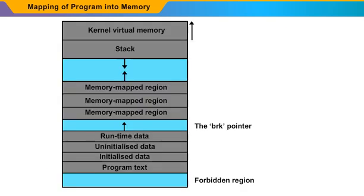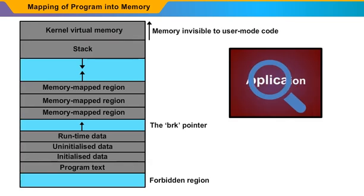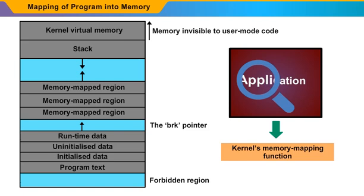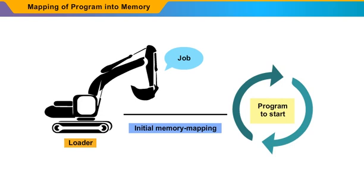The ELF loader reads the header and maps the sections of the file into separate regions of virtual memory. The image shown on the screen is the typical layout of memory regions set up by the ELF loader. The memory region set up by the ELF loader puts a kernel virtual memory region at the beginning of the layout, which is inaccessible to normal user mode programs. The rest of the virtual memory is available to applications, which can use the kernel's memory mapping functions. The job of the loader is to set up the initial memory mapping, which allows the execution of the program to start.